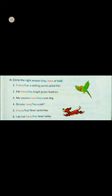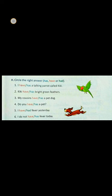Now circle the right answer. In the first sentence: 'I have or has a talking parrot called Kiki.' Here we circle 'I have' because we always use 'have' with 'I'. Okay, children.